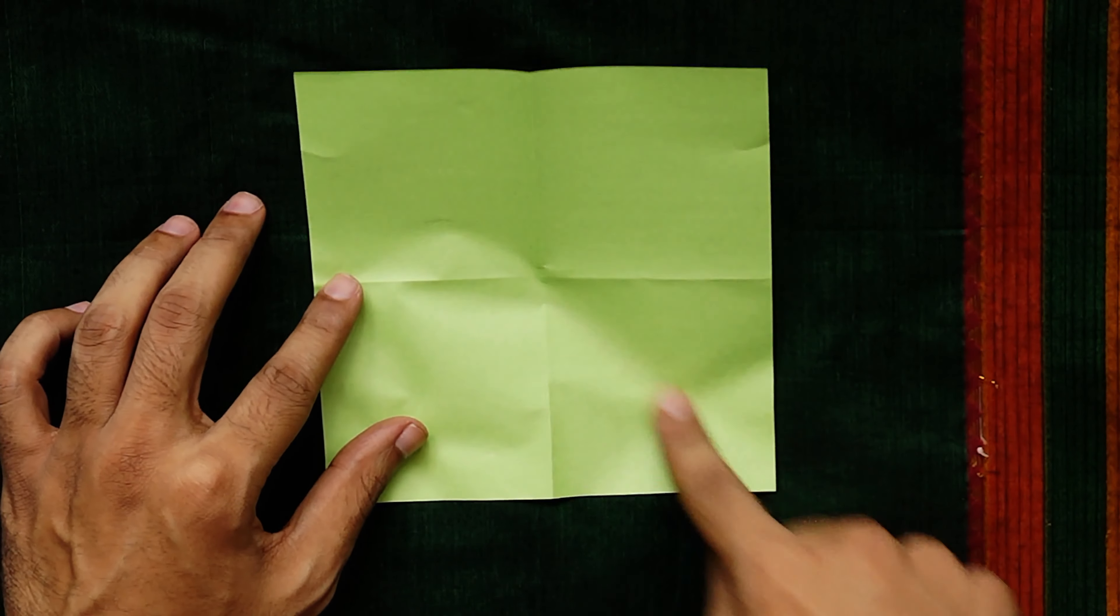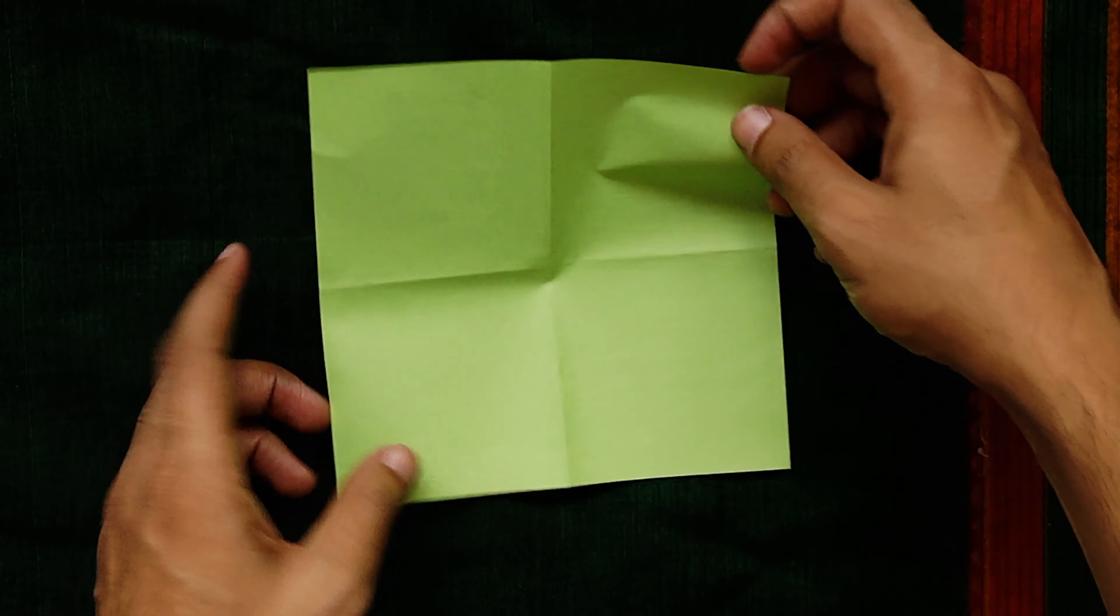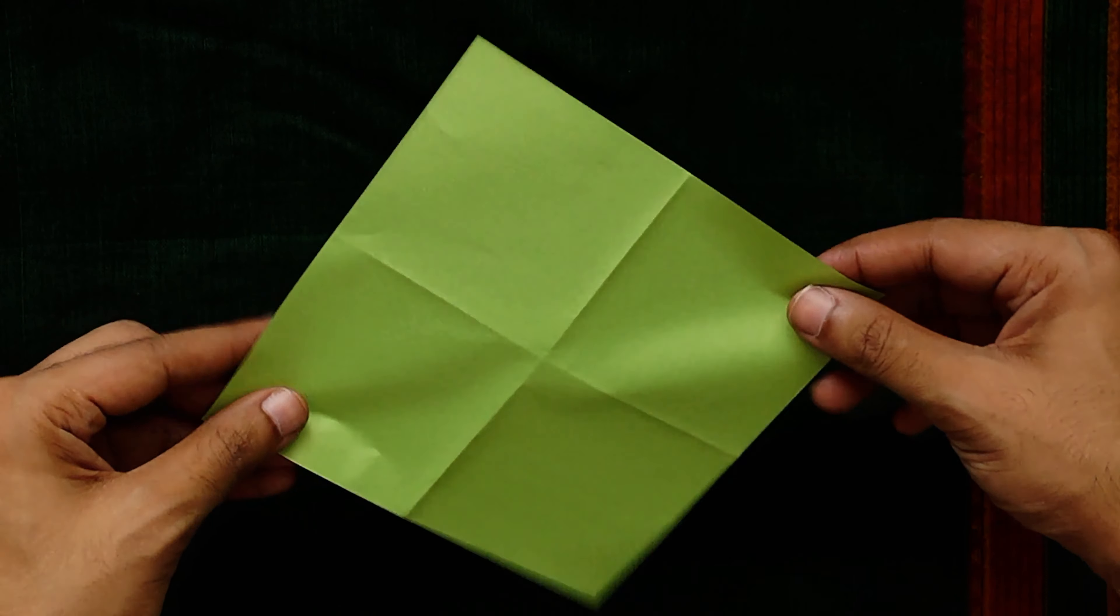Flip the paper over and this time fold it in half along both diagonals of the square to create two new creases that pass through the center point.